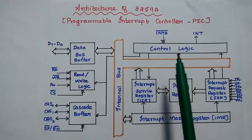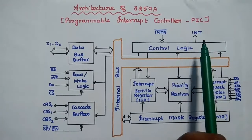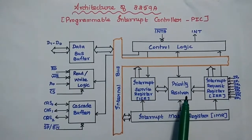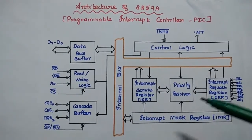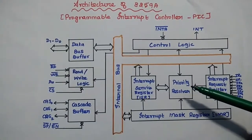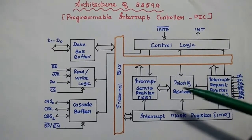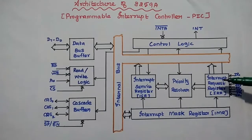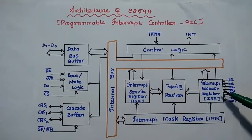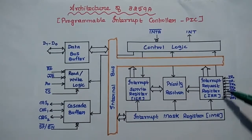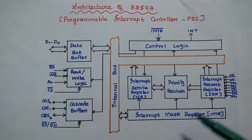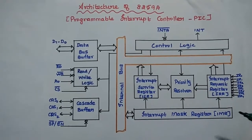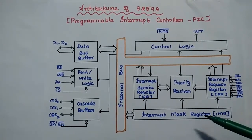The control logic unit sends the interrupt request to the processor and also receives the acknowledgement. Based on this request, it activates the registers. The priority resolver maintains the priority for each interrupt level and executes the highest priority interrupt first. The interrupt service register stores the interrupts which are currently in service in the processor. The interrupt request register stores all the interrupts requesting interrupt service to the 8259. The interrupt mask register stores the interrupts to be masked by storing the masking bits of the interrupts.